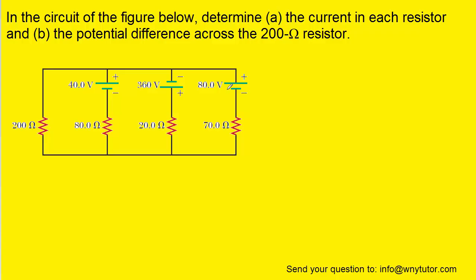To use Kirchhoff's rules, we have to draw currents in the circuit. In this section of the circuit right here, we can arbitrarily draw a current that's flowing to the left. Notice that that current would be flowing through this entire portion of the circuit, and we can call that current I1. There will be a different current flowing through this section of the circuit — perhaps we can draw it pointing upward — and we can call that I2.